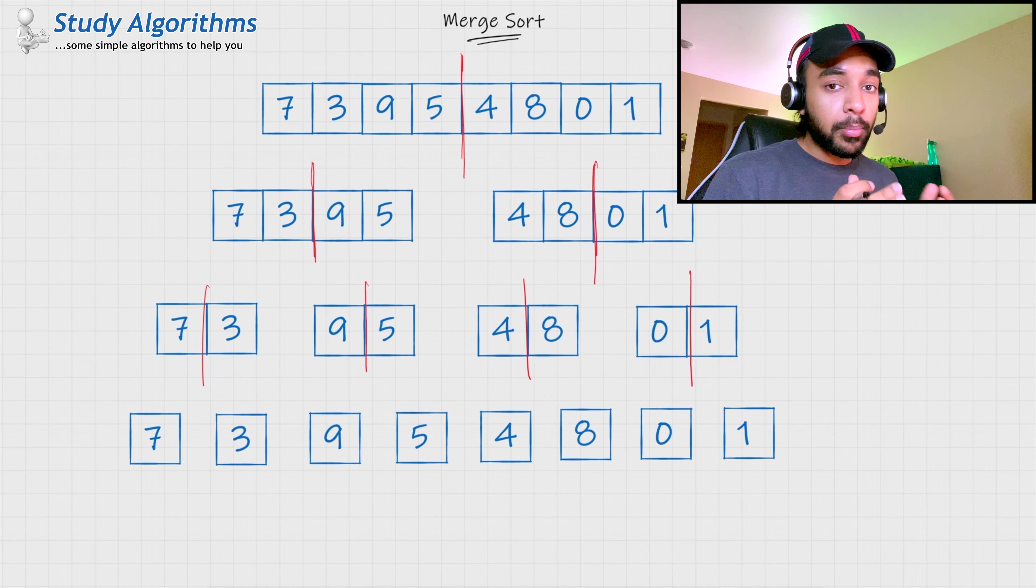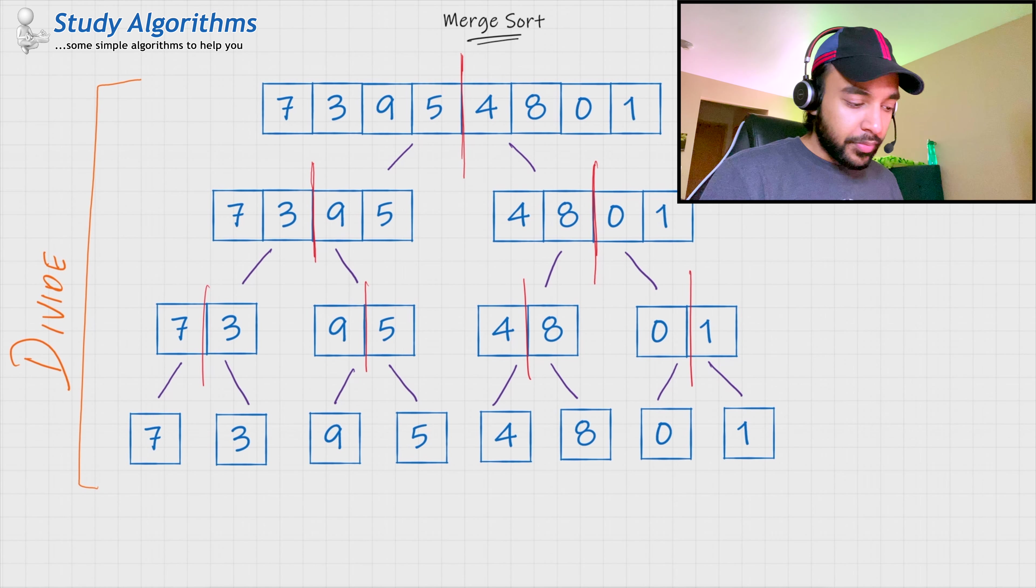So, now, we have completed the divide phase of our problem. And, we got individual elements out of the original array. Now, let us move on to phase two. And, see how this array eventually gets sorted.